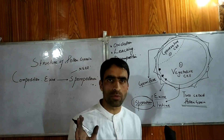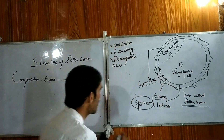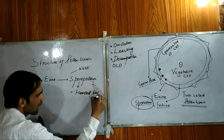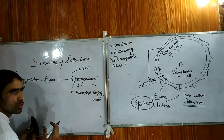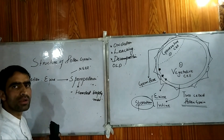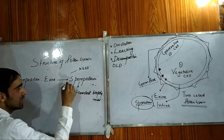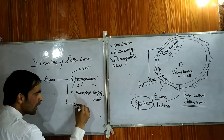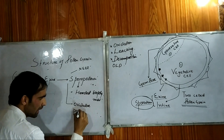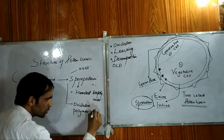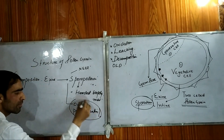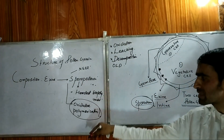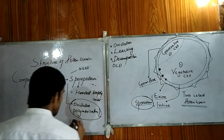What is sporopollenin? It is one of the hardest biopolymers of planet Earth. If we rank Earth's polymers and hardest substances, sporopollenin will be counted among the top. Please remember: sporopollenin is formed by oxidative polymerization of carotenoids. So it can be synthesized by oxidative polymerization of carotenoids.